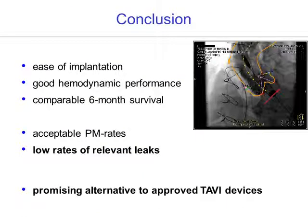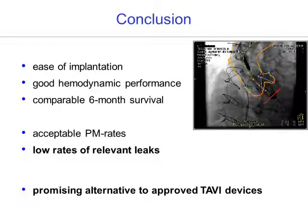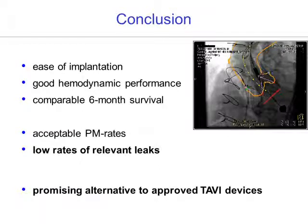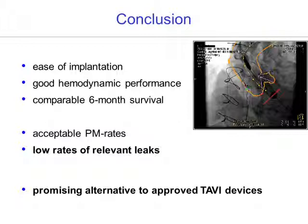In conclusion, the Symetis Accurate device provides a new alternative that is relatively easy to implant. The valve has demonstrated good hemodynamic performance, and the observed six-month survival data compare well with outcomes from other competitor valves. We saw acceptable pacemaker rates, and the particularly low rate of relevant paravalvular leaks is very promising. This new device represents a viable alternative to currently approved TAVI devices.